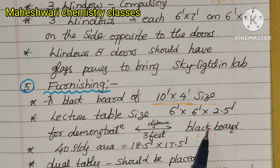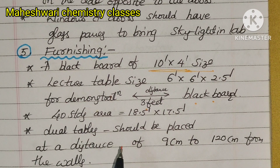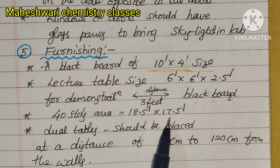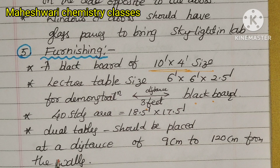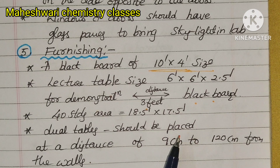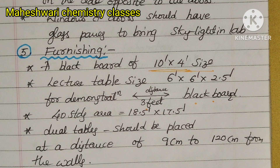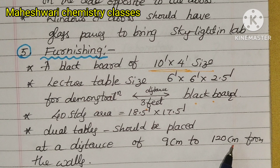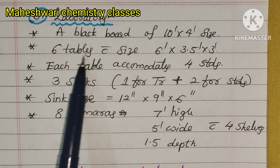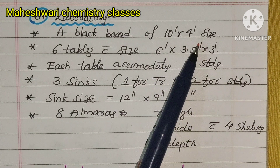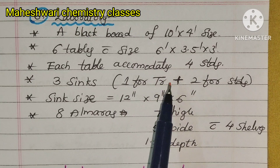The 40 students area requires 3 feet distance between rows. The 40 students area is 18.5 feet by 17.5 feet. Dual tables should be placed, and laboratory tables are located at a distance of 9 cm to 120 cm from walls.